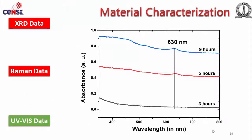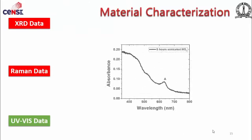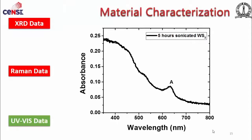In the UV spectra, we see absorption in the visible range. When plotted individually, we get a quite good peak at 630 nanometers, which is again a signature for these exfoliated nanosheets.